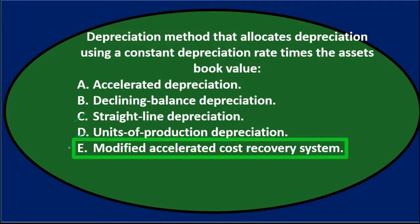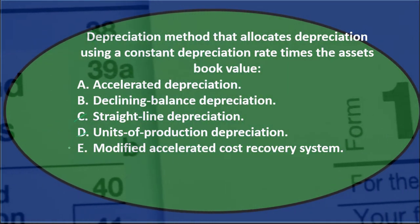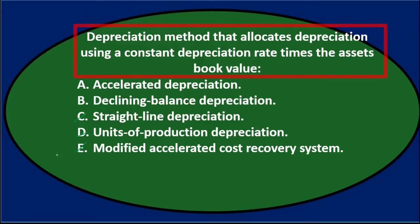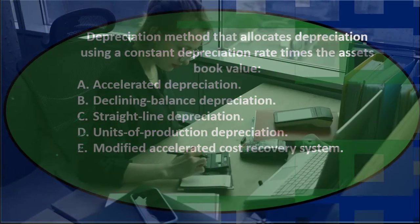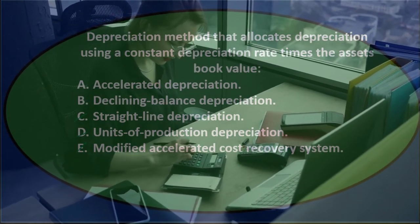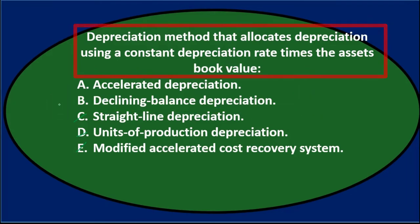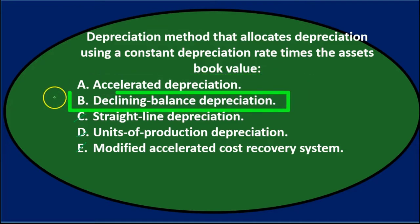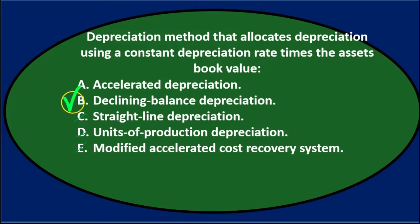E says modified accelerated cost recovery system, and that has to do with the tax code — so that's tax code depreciation. That's probably not the correct answer if we're focusing on financial accounting rather than the tax code. So we're left with A and B. Depreciation method that allocates depreciation using a constant depreciation rate times the asset's book value — either A, accelerated depreciation, or B, declining balance depreciation. The answer is actually B, being more specific.